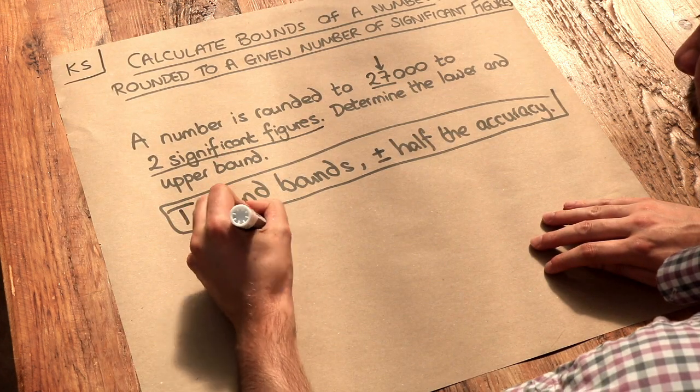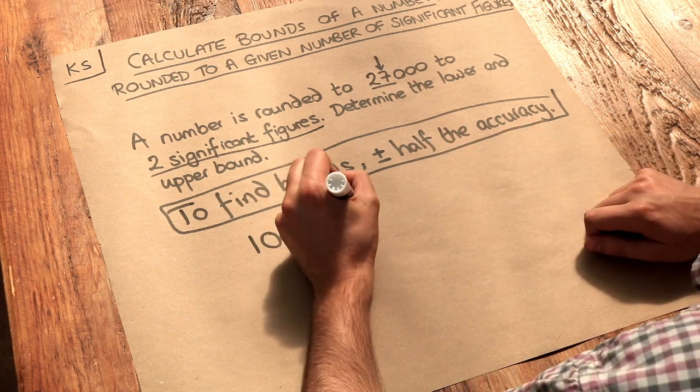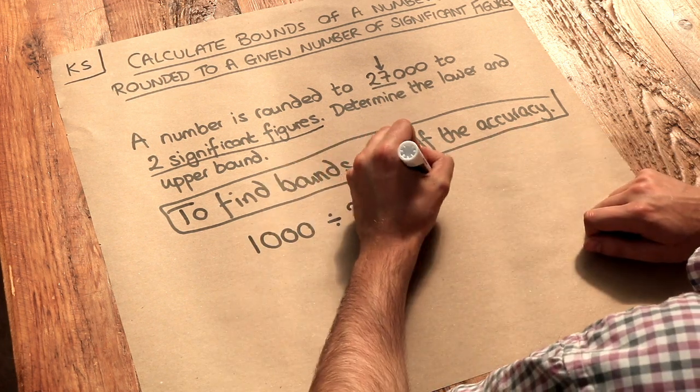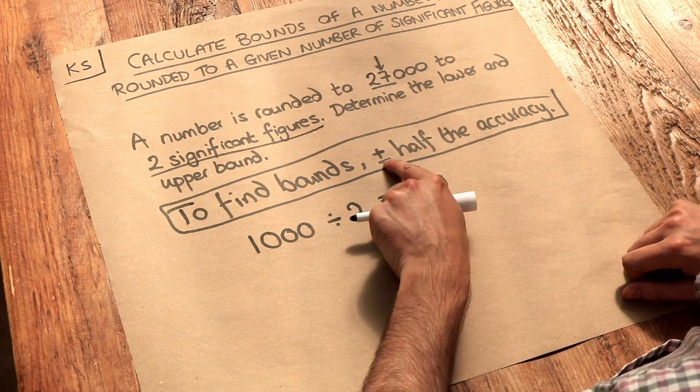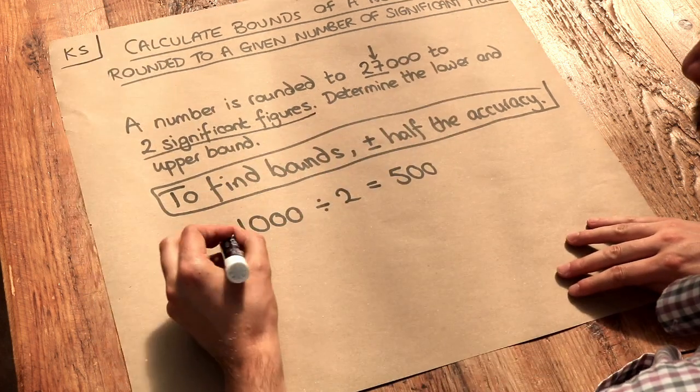So we take that accuracy of the nearest thousand and we halve it. So divide by two, that gives us 500. And then we're going to add or subtract half that accuracy, the 500, to that original number.